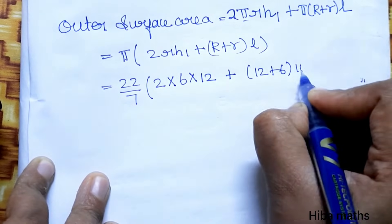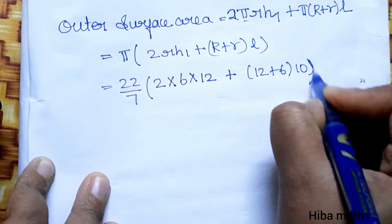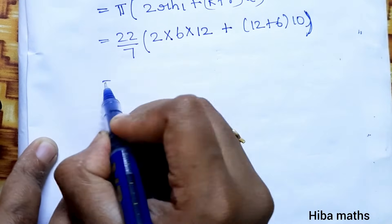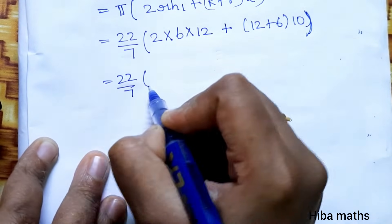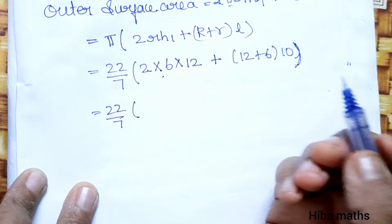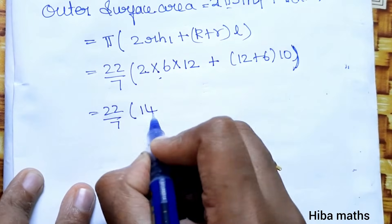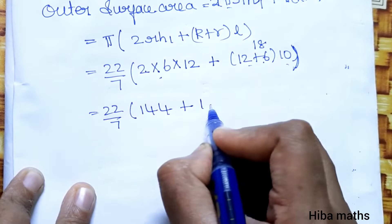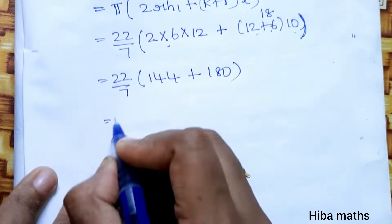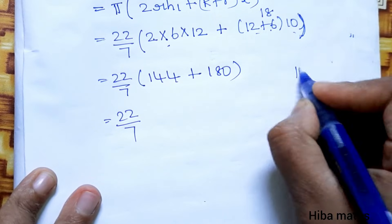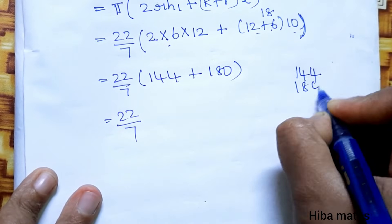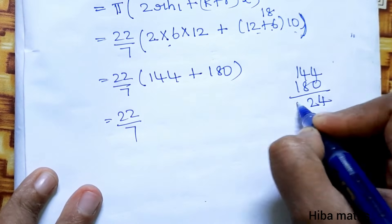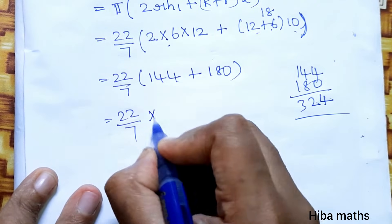This equals π times (12 plus 6) times 10. So 22 by 7 times (2 times 6 times 12 plus 12 plus 6 times 10). That's 22 by 7 times (144 plus 180). So 22 by 7 times 324.